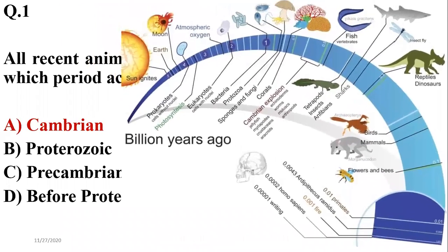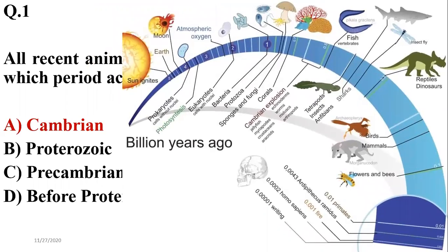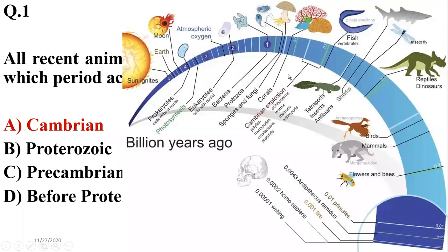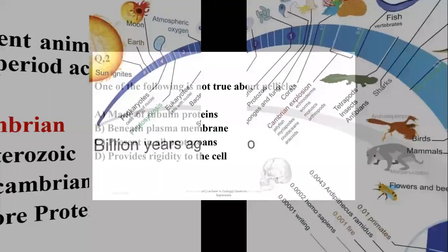This can be confirmed from the diagram: during the Cambrian explosion, almost all types of animal phyla as well as different groups of protists which are present today were also present then. So the correct option is A.